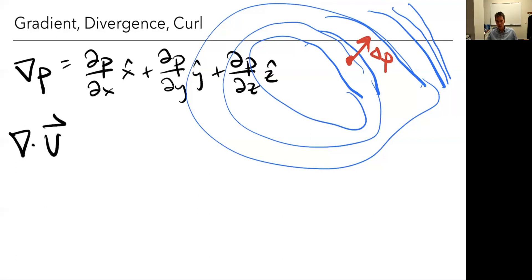Divergence operates on a vector, and it produces a scalar. And in this case, the divergence of v, I'll write this in Cartesian coordinates, this is the partial of the x component with respect to x, plus the partial of the y component with respect to y, plus the partial of the z component with respect to z.